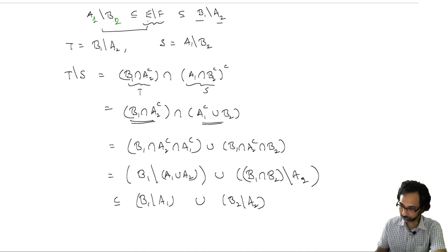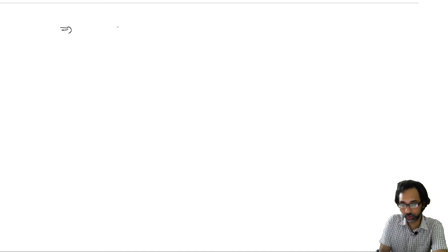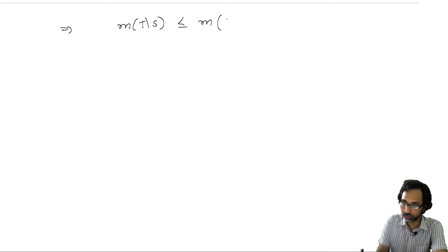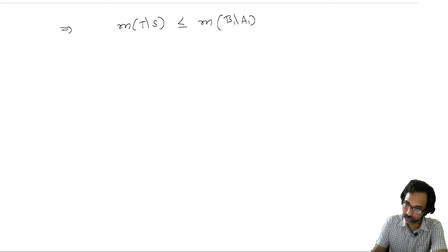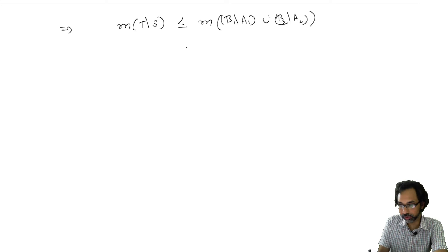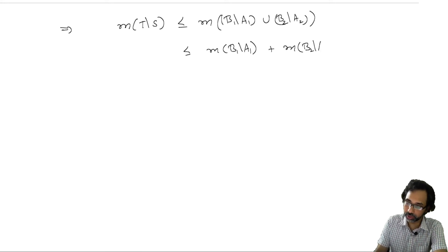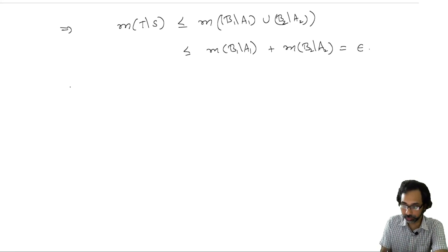Therefore, by monotonicity, the measure of T minus S is less than or equal to the measure of (B1 minus A1) ∪ (B2 minus A2), and by finite subadditivity this is less than or equal to the measure of B1 minus A1 plus the measure of B2 minus A2, which is at most epsilon. This implies that E minus F is Jordan measurable.